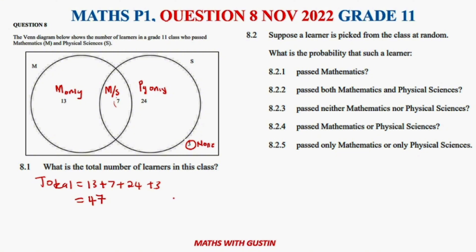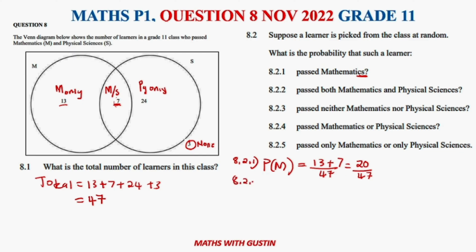Question 8.2 says: suppose a learner is picked from the class at random. 8.2.1 asks: what is the probability that such a learner passed Maths? Be careful — it didn't say passed Maths only, so we include those who passed Maths (13) and those who passed both Maths and Physical Science (7), giving us 13 plus 7 divided by 47, which is 20 over 47.